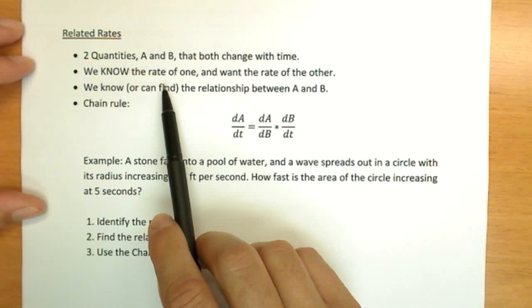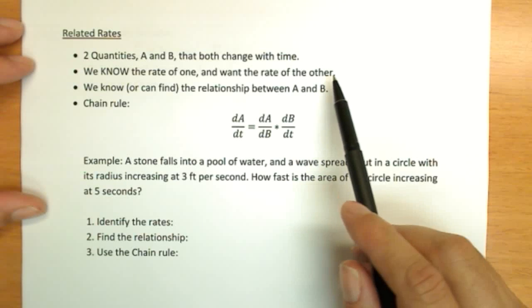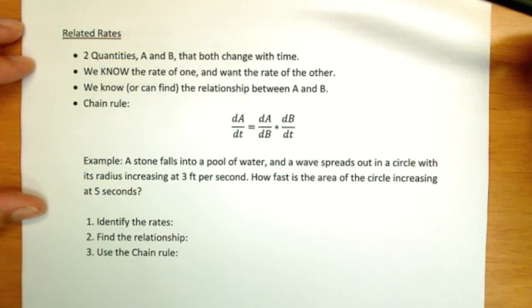We know the rate of one, so we'll know the speed of something, and we want to know the rate or speed of something else. And so that's why they're called related rate problems.